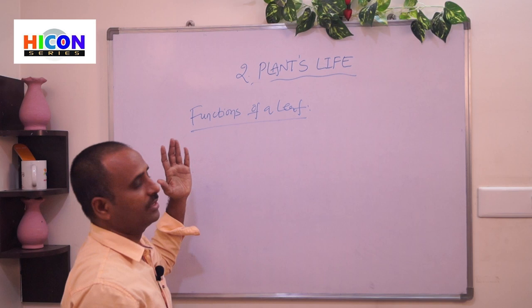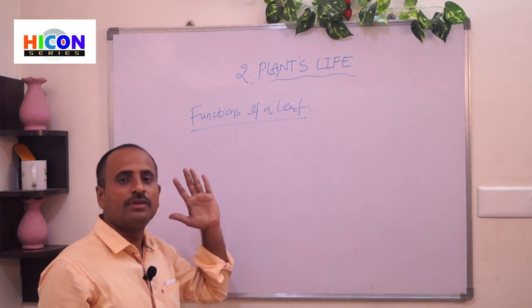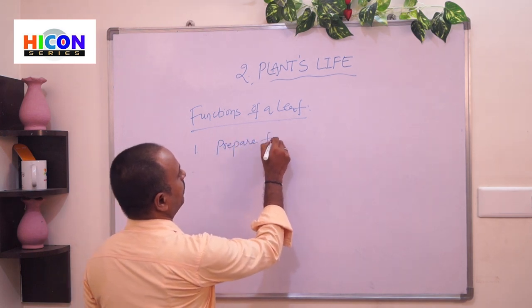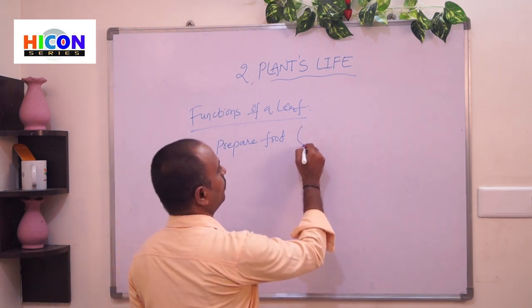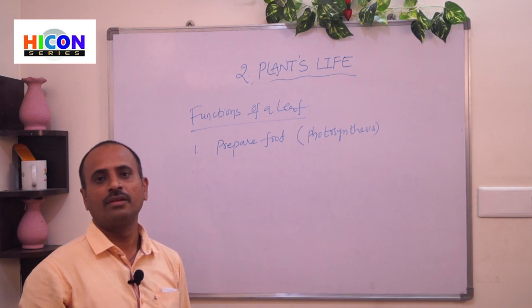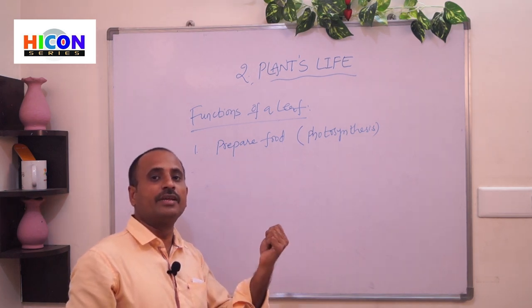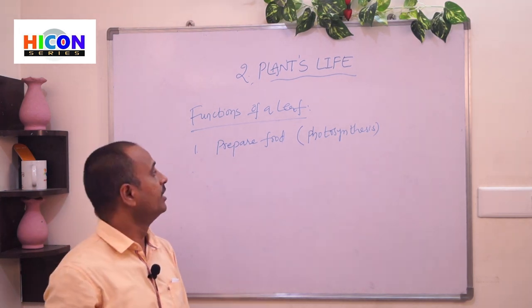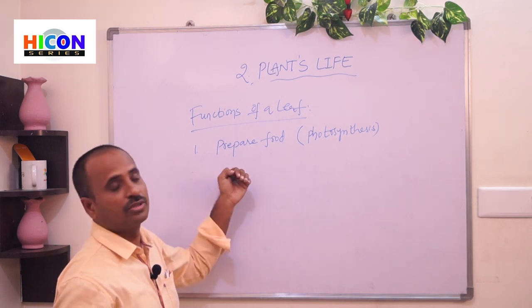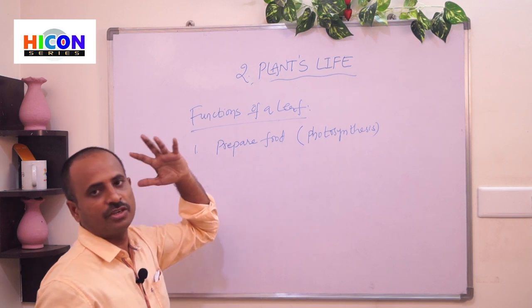Now let us learn the functions of the leaf. The main function is that leaves prepare food for the plant through photosynthesis. The water absorbed by the roots and the carbon dioxide breathed in by the leaves are mixed in the presence of sunlight and chlorophyll to prepare food — glucose — for the plant in the form of fruits and vegetables. This process is called photosynthesis.